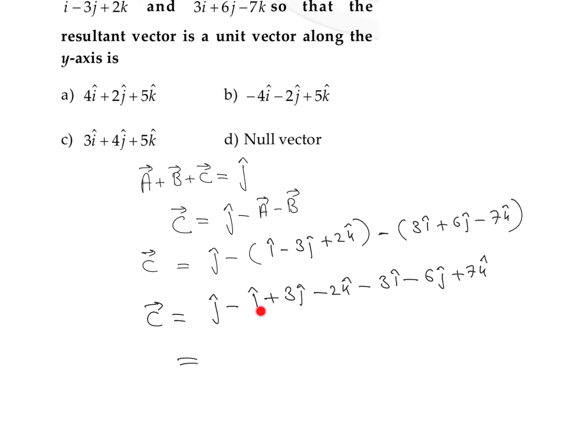Now we can identify the x component. This is minus i and this is minus 3i, then we are going to get the resultant as minus 4i cap. Then we can observe j cap, and over here we are having j cap.